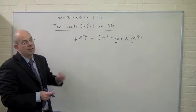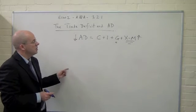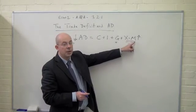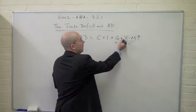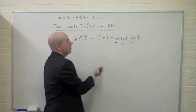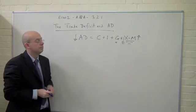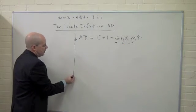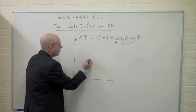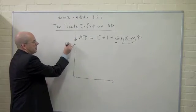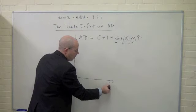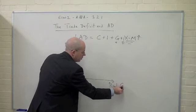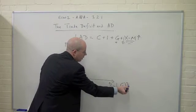Now what does this mean for aggregate demand? Well we can see that with imports going up this will shift aggregate demand inwards, and with exports going down it's going to have the same impact. So what we can see in terms of an aggregate demand diagram is what is going to be the impact on the general price level, on inflationary pressures, and what's going to be the impact in terms of real economic growth.